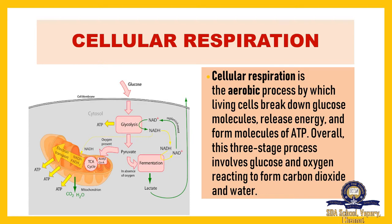From the mixture of gases we breathe in, only oxygen is taken by our body; the remaining gases are exhaled. When we consume food, the food is broken down into glucose. This glucose undergoes glycolysis — the energy conversion process. In the presence of oxygen, glucose is broken down to produce ATP as energy, along with carbon dioxide and water. This is called cellular respiration, and it takes place with the help of oxygen.